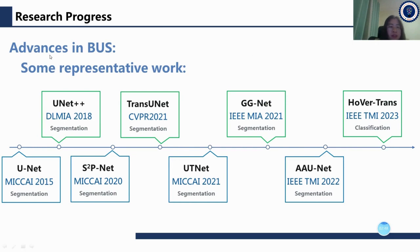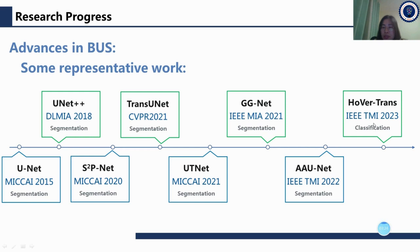Here are the advances in BUS — some representative works. First is the famous U-net proposed in MICCAI 2015, then U-net++, S-square P-net, Trans U-net, UT-net, Double G-net, and Double A-U-net. These networks all focus on BUS segmentation, and HOBER-Trans proposed in IEEE-TMI 2023 focused on classification.